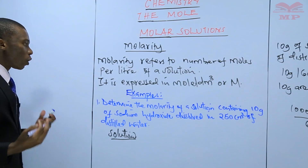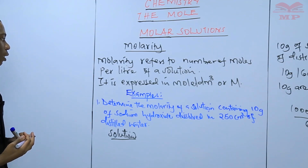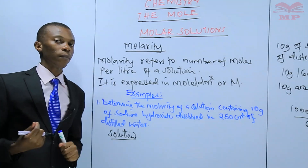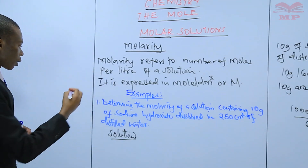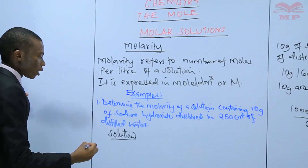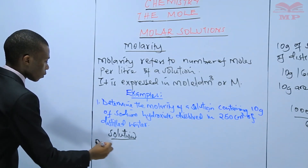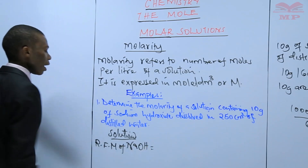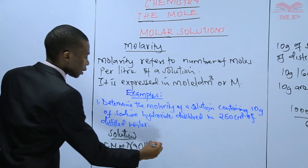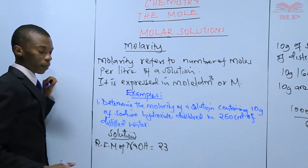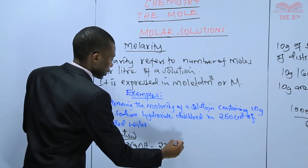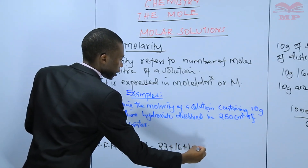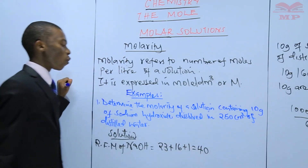In this question, we have first of all to calculate the number of moles of sodium hydroxide. And before that, we have to calculate the RFM of sodium hydroxide. The RFM of sodium hydroxide is 23 — that is the mass of sodium — plus the mass of oxygen, which is 16, plus the mass of hydrogen, which is 1. This gives you 40.